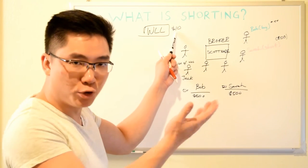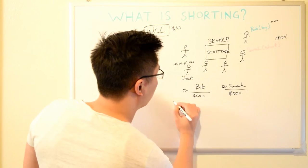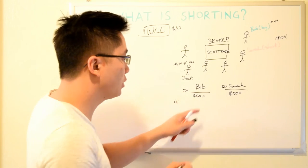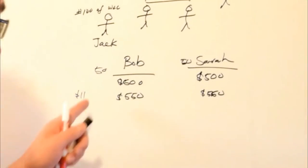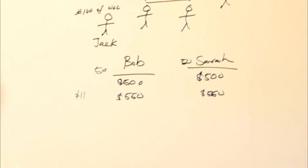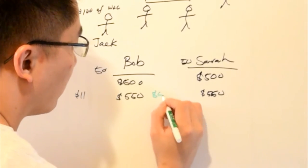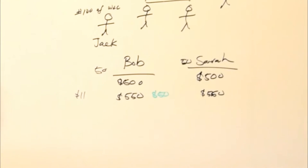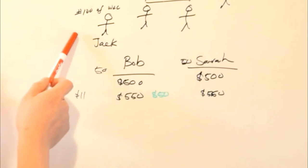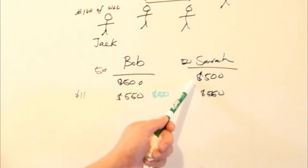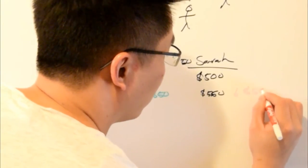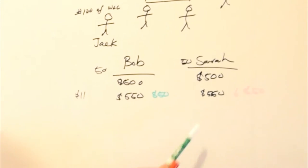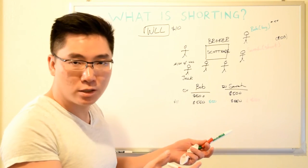Let's say the price appreciates to $11. Bob's shares are now worth $550 - if he sells, he gains $50 because he bought and the price appreciated. However, Sarah borrowed shares from Jack and sold 50 of them at $10 each for $500. If the price goes up, Sarah needs to buy those 50 shares back to return to Jack, but now they cost $550. Sarah just lost $50 because she sold at $500 but has to buy back at $550.